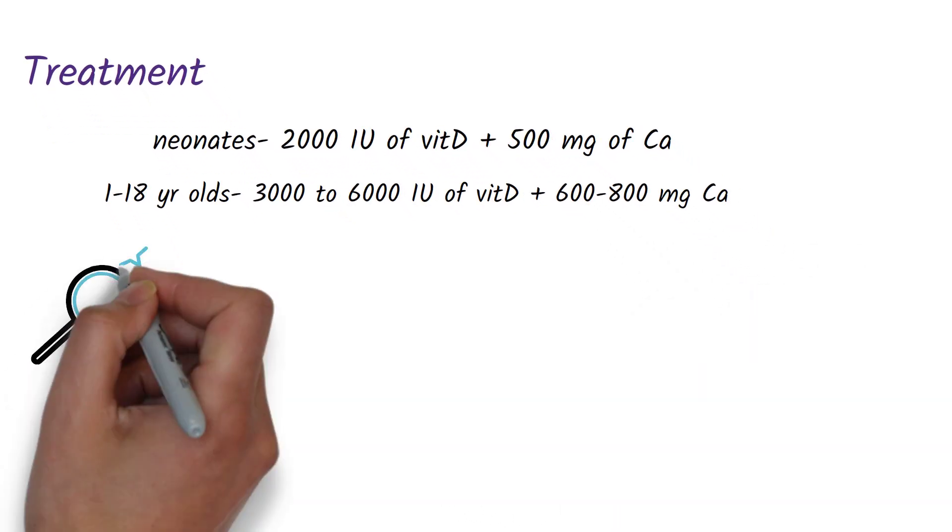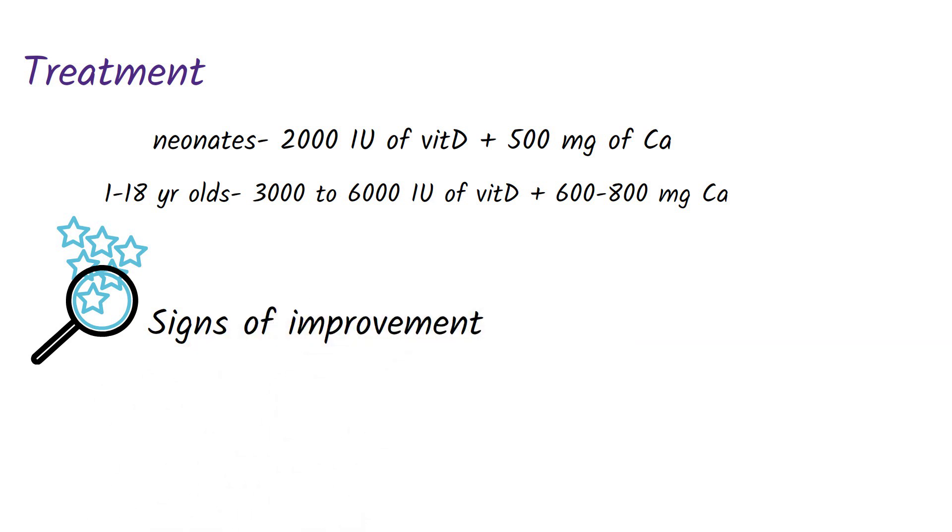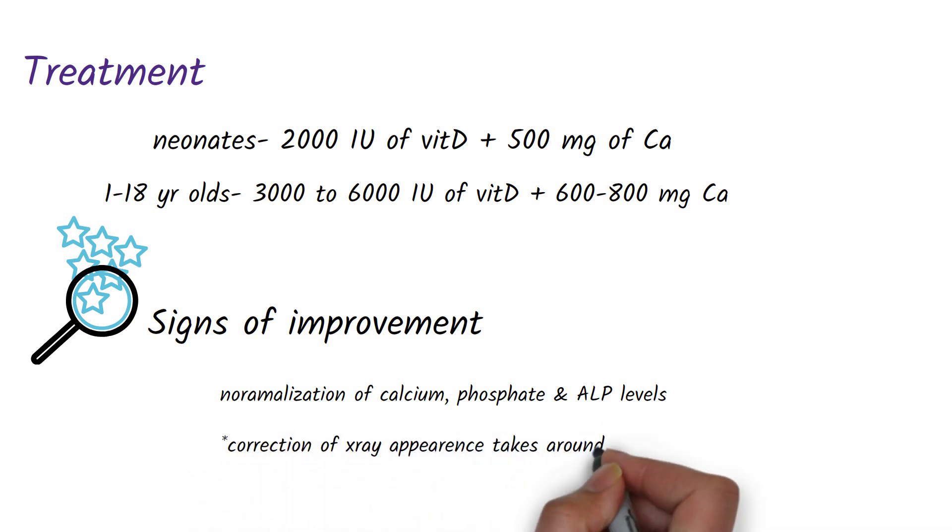The signs of improvement of this condition are normalization of the serum calcium, serum phosphate, and alkaline phosphatase levels. The correction of the x-ray appearance takes around six weeks.